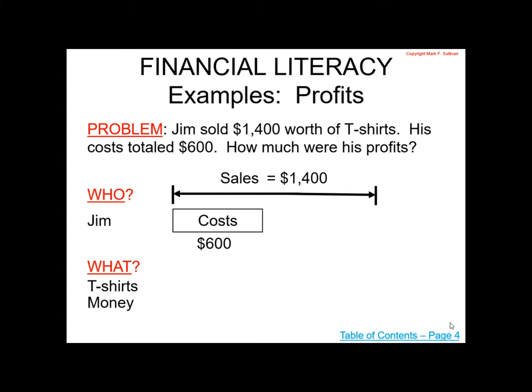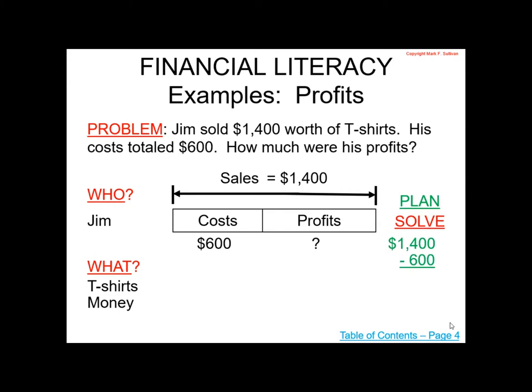His cost totaled $600. We want to know what his profits are. Cost plus profits equals sales, or alternatively, sales less cost equals profits. We will take sales and subtract costs, and that will give us profits. In this case, that's $800. The answer is Jim's profits were $800.